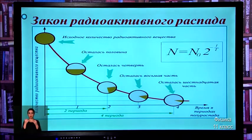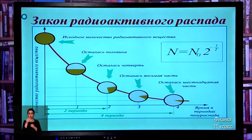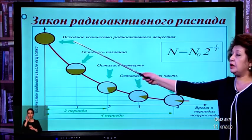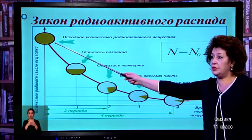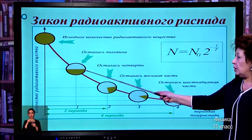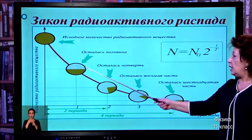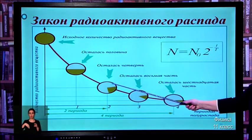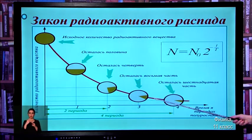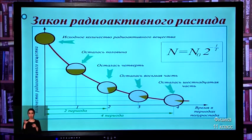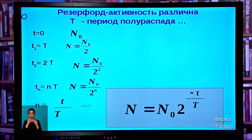When studying the properties of radioactive decay of various radioactive chemical elements, it was found that the activity of their radiation decreases by half each time from the previous value. For example, at the initial moment there was a certain number of nuclei; after some time, half remained, then a quarter, and so on — always half of the previous amount.